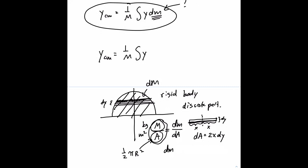So dm, once again, is equal to capital M over capital A times dA. So let's make that substitution. The location of the center of mass is 1 over m times the integral of y dm, where dm is substituted with m over A dA.